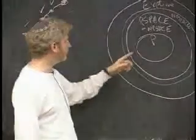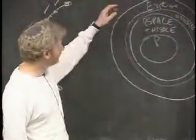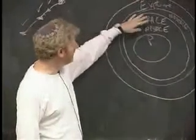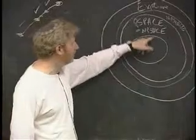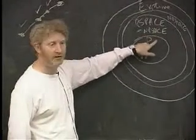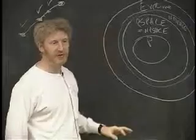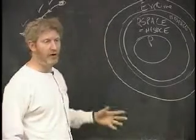then we would know that p space is definitely not polynomial time. We'd know that these two things, the border here, is a real border and that these two can't collapse together. But we don't know that.